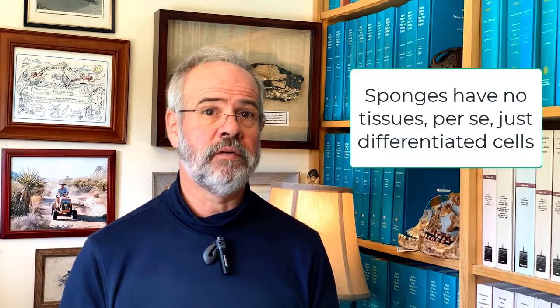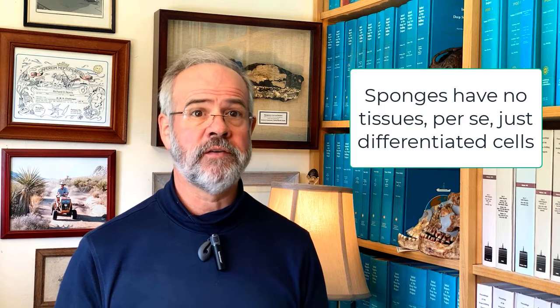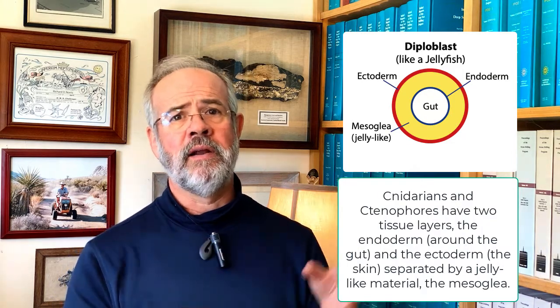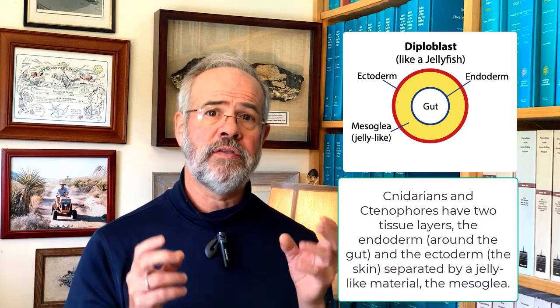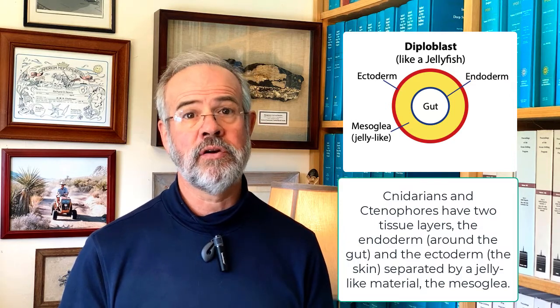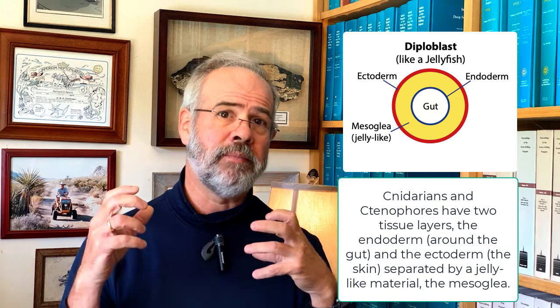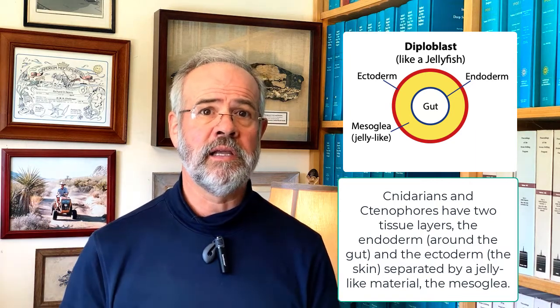We classify metazoans based on their body symmetry, their growth and development, and tissue layers. For instance, the sponges have no proper tissues, just cells differentiated for different functions. Sponges can be cut into chunks and these will regrow into whole sponges. Worse, they can be blended up in a blender and the goop left over can reassemble into a sponge. In contrast, the cnidarians, the sclerates, and the ctenophores have two thin tissue layers called the ectoderm and the endoderm, separated by a gelatinous layer called the mesoglia. Things like jellyfish typically have radial symmetry.